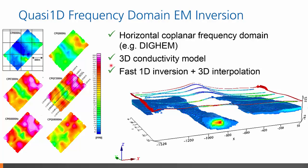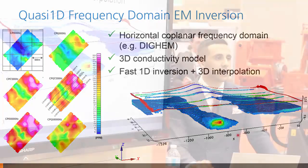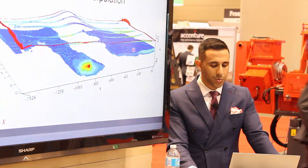Here we see a typical DIGIM survey consisting of data acquired at three frequencies: 900 Hz, 7,200 Hz, and 56 kHz. You have the in-phase component on the left and the quadrature component on the right. Voxi EM takes this data and produces a 3D conductivity model, which can be used to guide further exploration and interpretation.